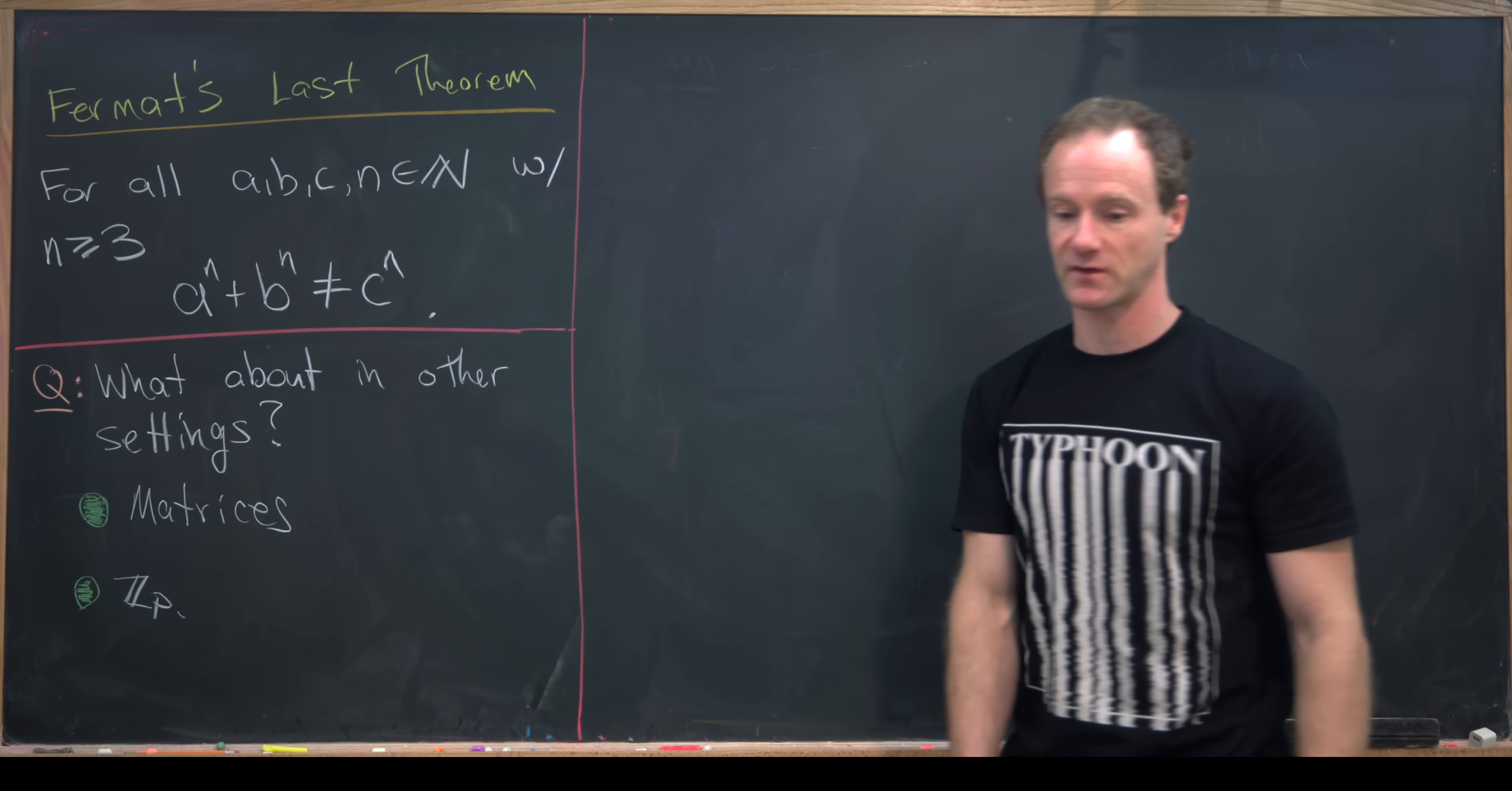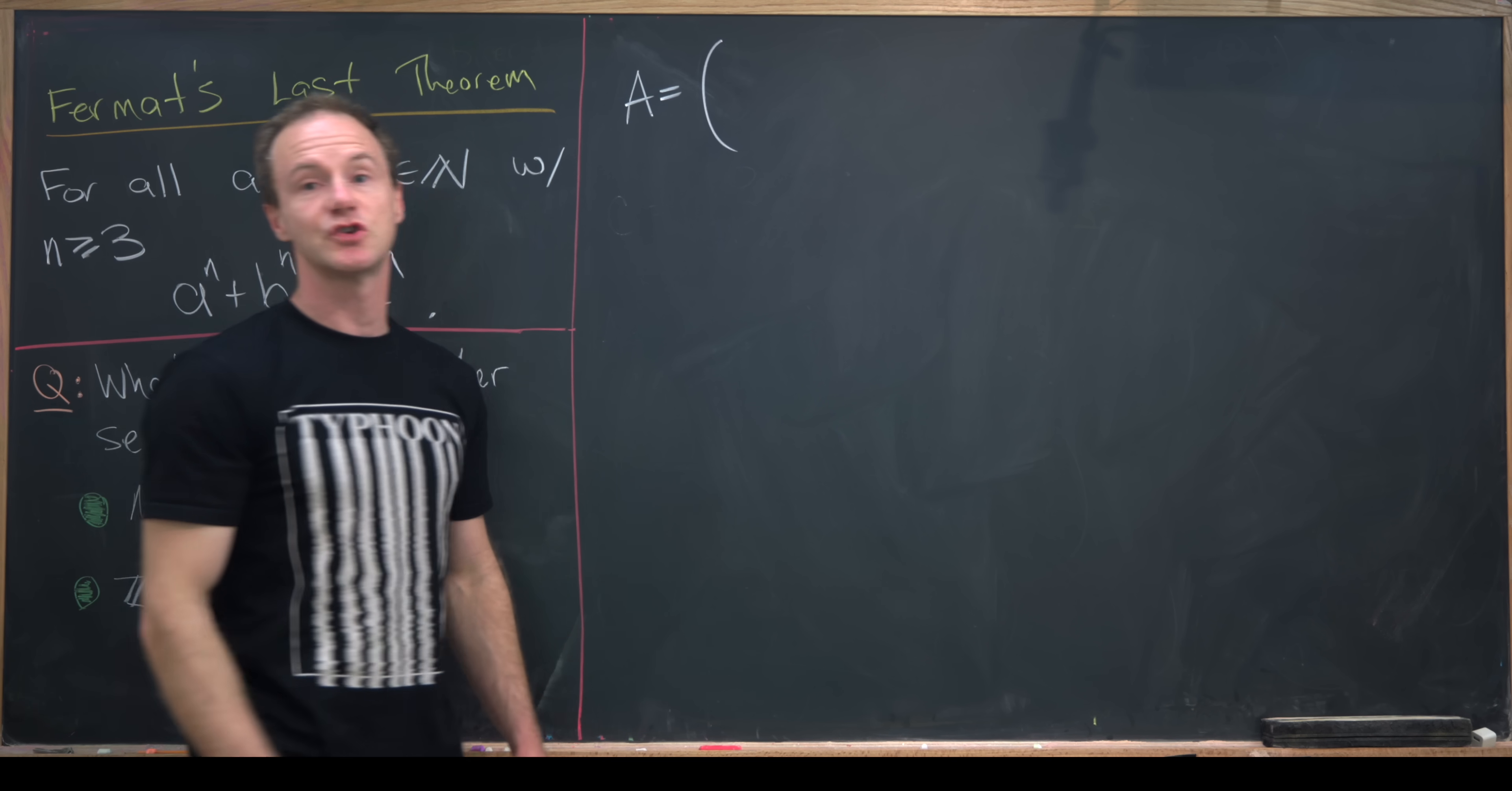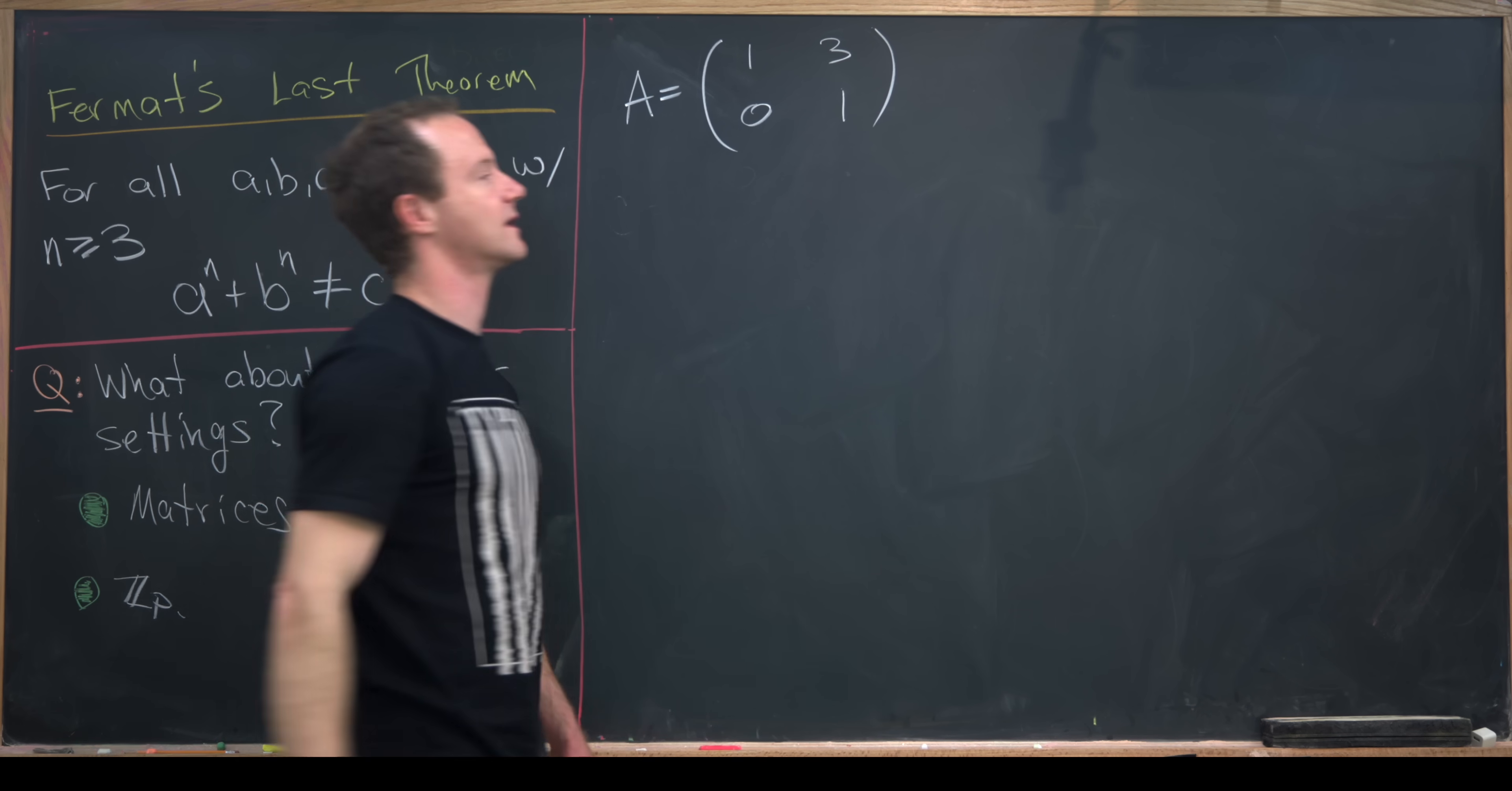So let's look at our matrix example first. So let's start by defining a matrix capital A. So we'll define it as 1, 3, 0, 1.